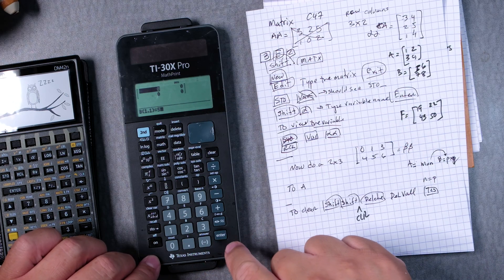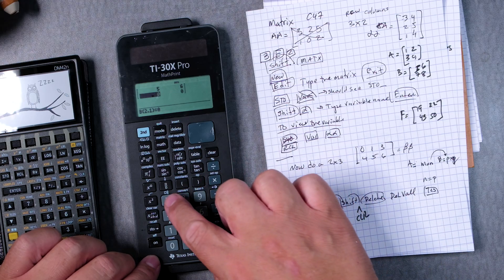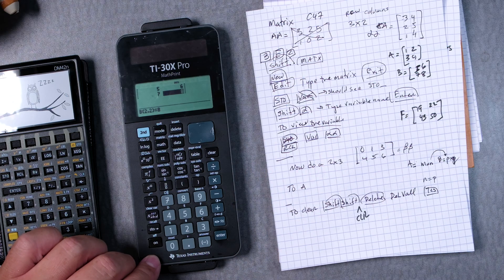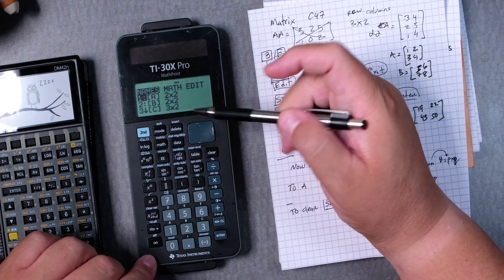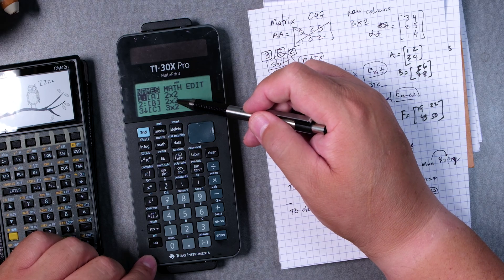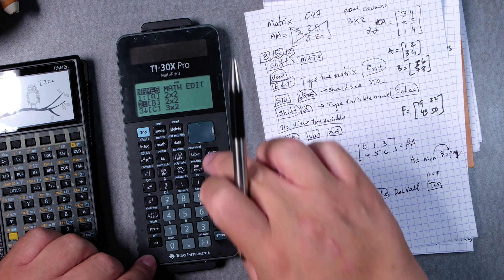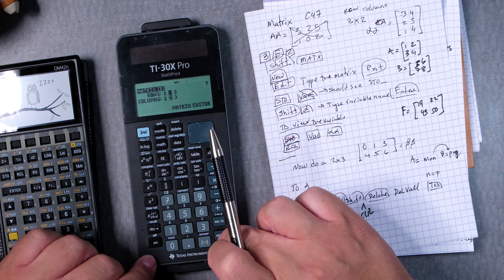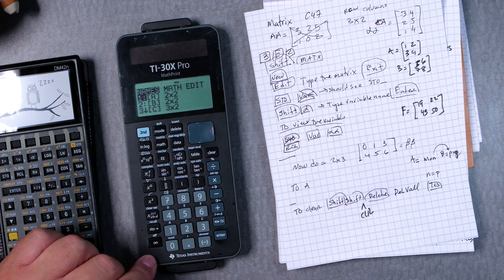So I need five, enter, six, enter, seven, enter, eight, enter - five, six, seven, eight. And we can go second matrix. Now we have A and B, a two by two and two by two. You want to double check if B is correct. So you go to edit, go to B, and it's two by two and those are the numbers, correct.